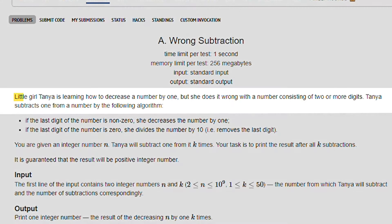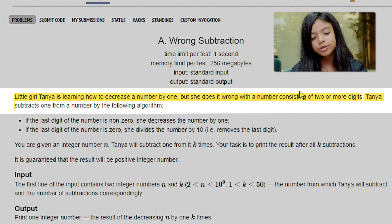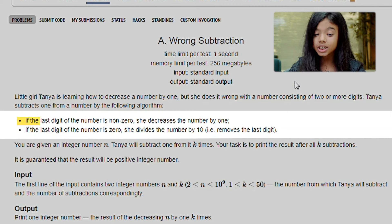Little girl Tanya is learning how to decrease a number by one, but she does it wrong with a number consisting of two or more digits. Tanya subtracts one from a number by the following algorithm.